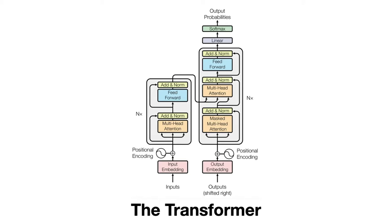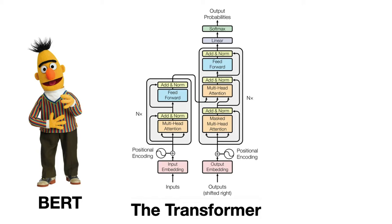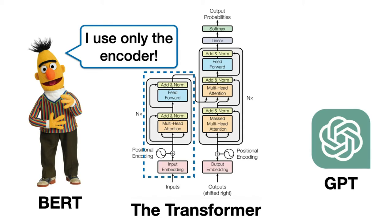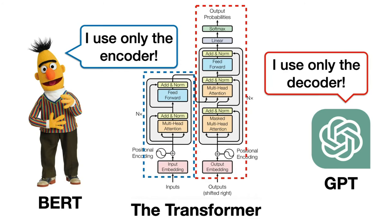Before we dive into the specifics of the BART model, let's briefly revisit BERT and GPT. BERT is a transformer-based model that uses the encoder of the transformer to pre-train on lots of text, using the masked language modeling and the next sentence prediction objectives. On the other hand, GPT is an autoregressive language model that generates text by predicting the next word in a sequence using the decoder in the transformer model.